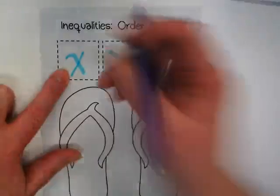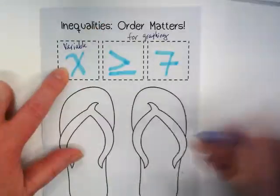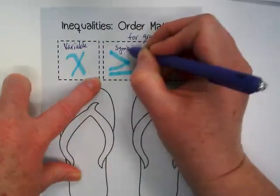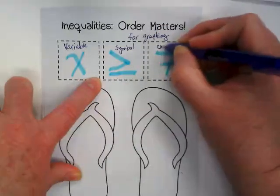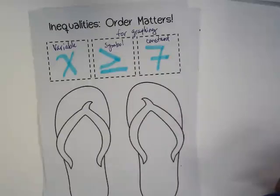If you have your variable on the left, and I'd like you to label these as we go, and your symbol in the middle, with the constant to the right, graphing will be incredibly easy for you.